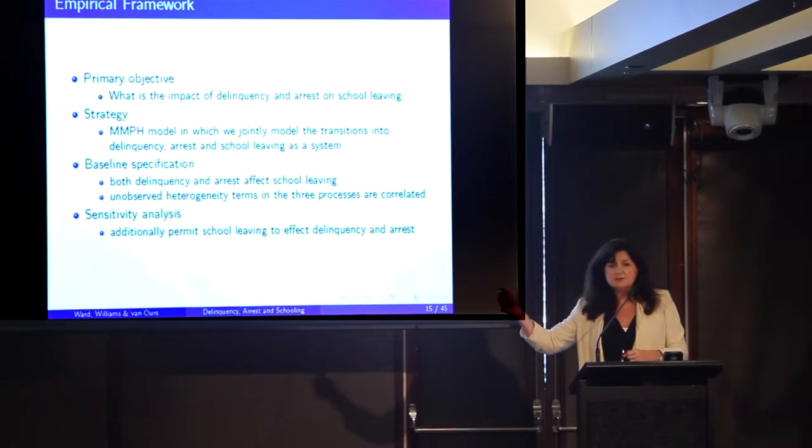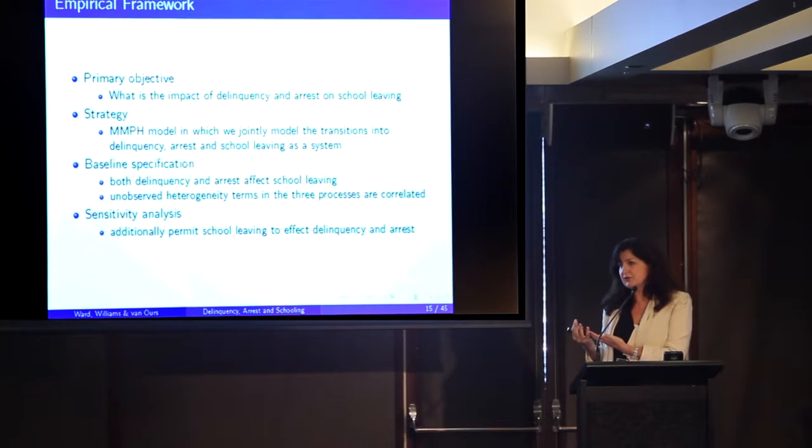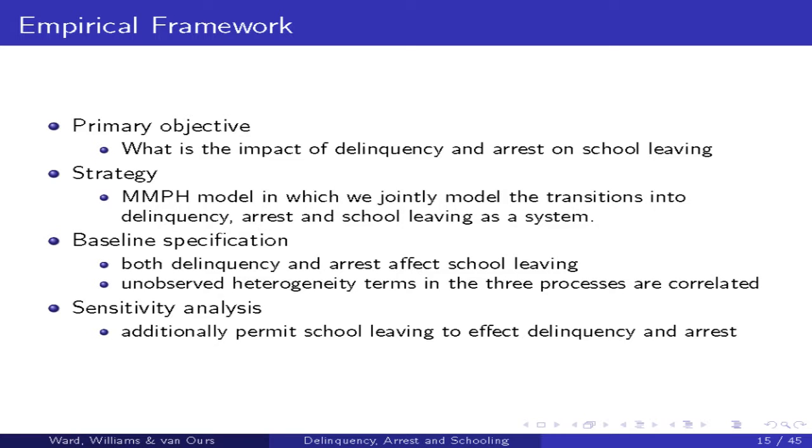Now, that's descriptive. I want to know what the effect of these choice variables are — of delinquency and the outcome of their choice, which is being arrested — on school leaving. The strategy I'm going to employ is a multivariate mixed proportional hazard. The idea is we model those transitions as separate processes — we have an equation for each one, estimated as a system. Each has unobserved heterogeneity to allow for those types — susceptible or vulnerable and those who are not — with a joint distribution that allows for correlation in unobservables.